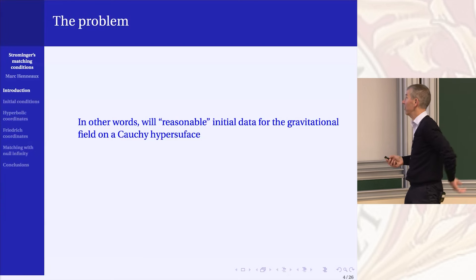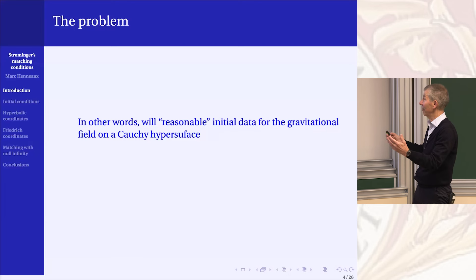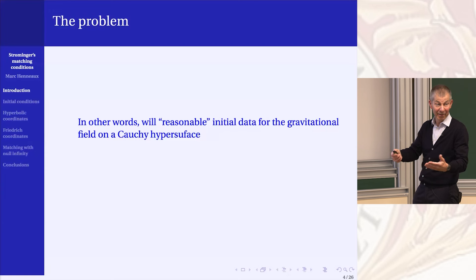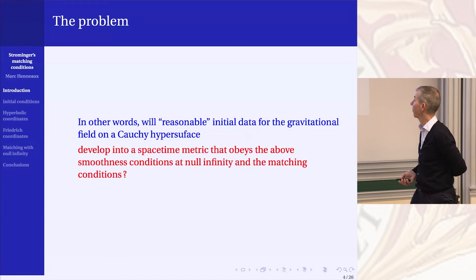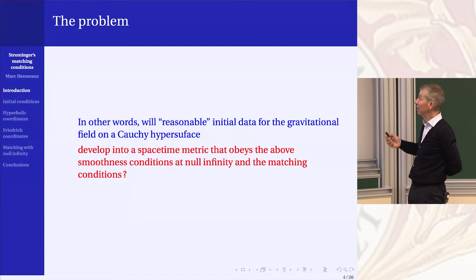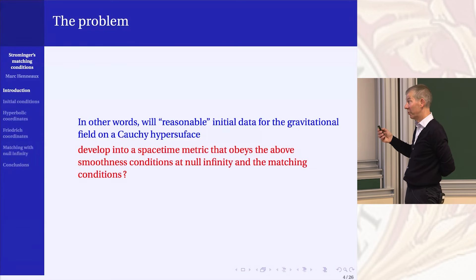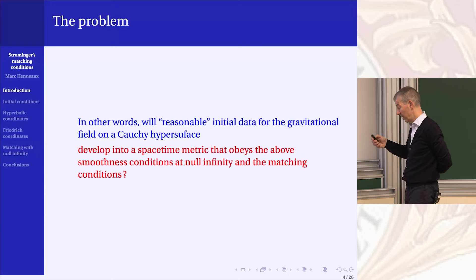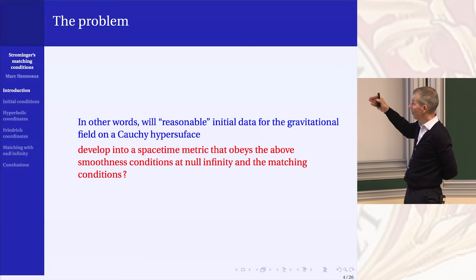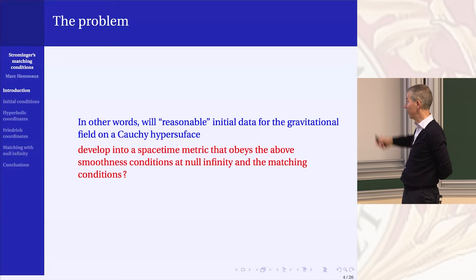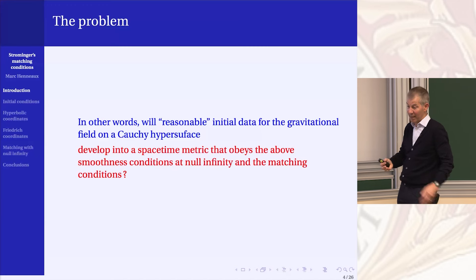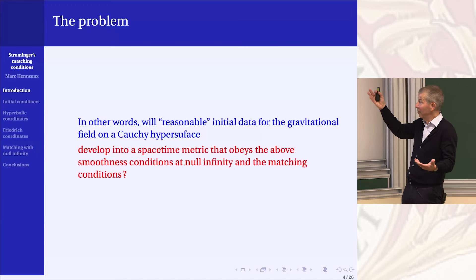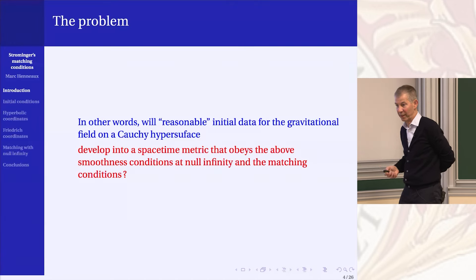You have to specify the initial data. If they are reasonable — in particular if they obey the initial conditions from the first lecture — will that fulfill the matching conditions of Strominger? Also, there are some smoothness conditions assumed, in the sense that some sub-leading log r over r squared or log r over r cubed terms are not included in the original Bondi expansion. But thanks to Thibault, we know they should be present. You must ask: if I take initial data and evolve them, will I get a metric fitting the Bondi metric, or will there be extra terms?